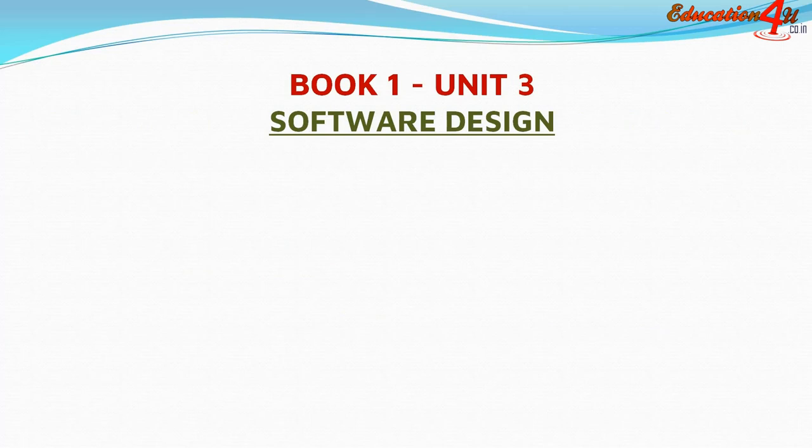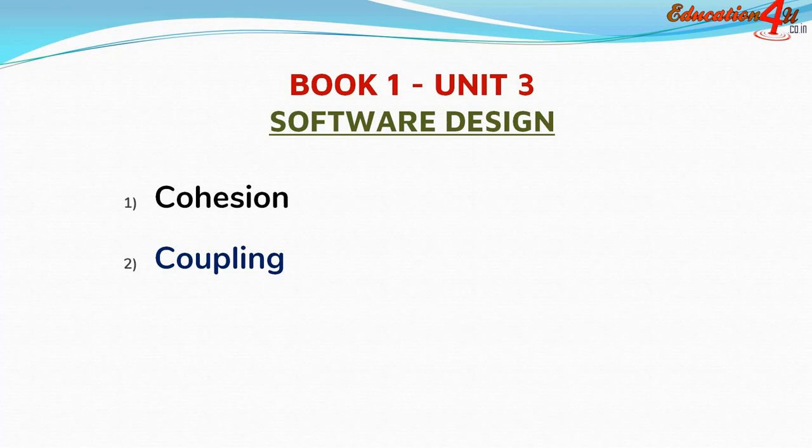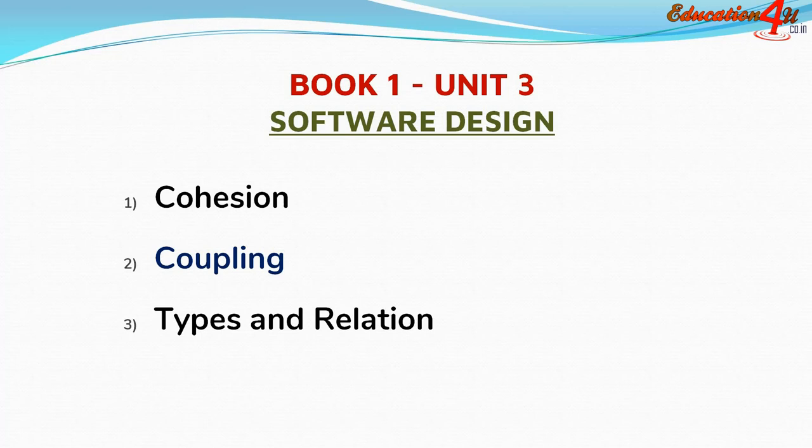Coming to Book 1, Unit 3 — that is Software Design. The important questions here are cohesion and coupling. You should know the types of cohesion and coupling and the relationship between cohesion and coupling. This is a very important topic, and you have already studied it in Semester 1 as well.